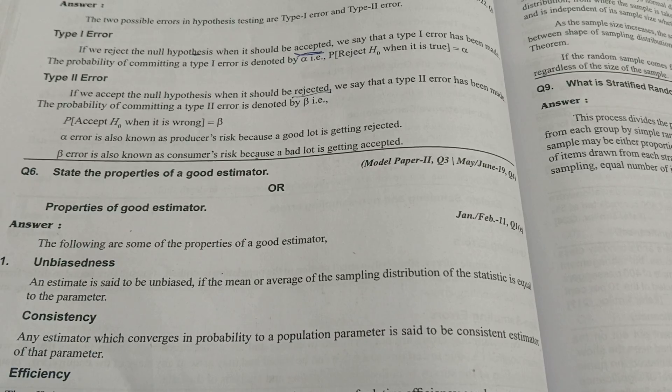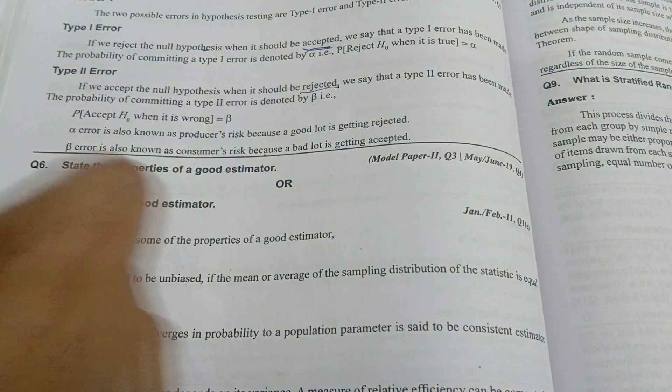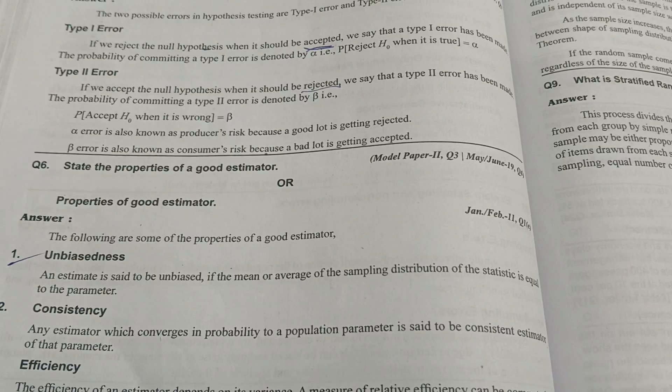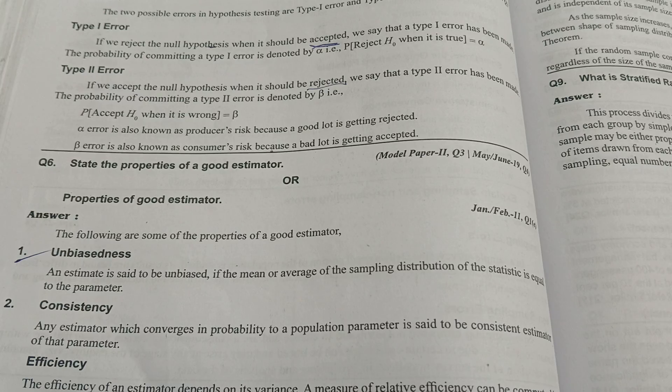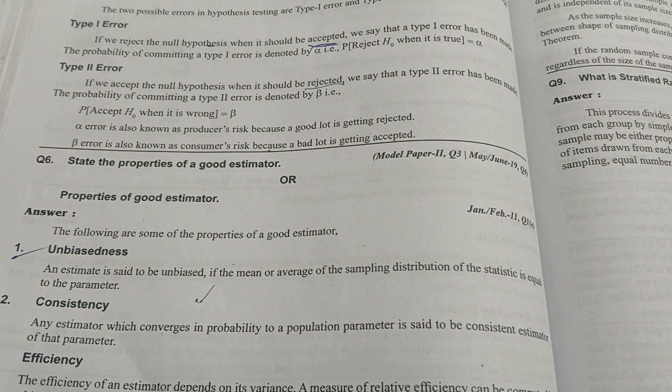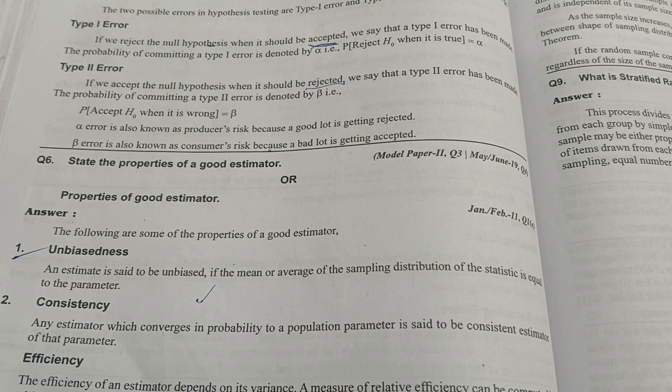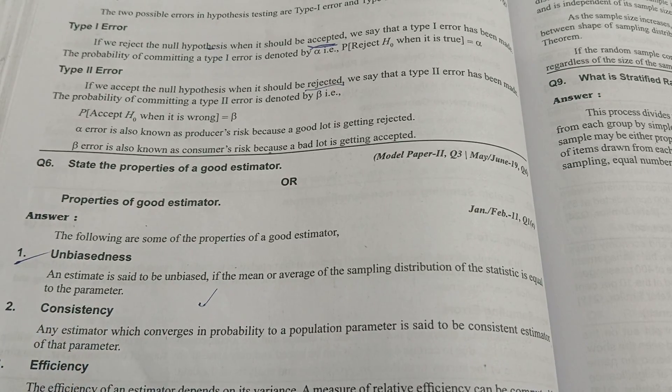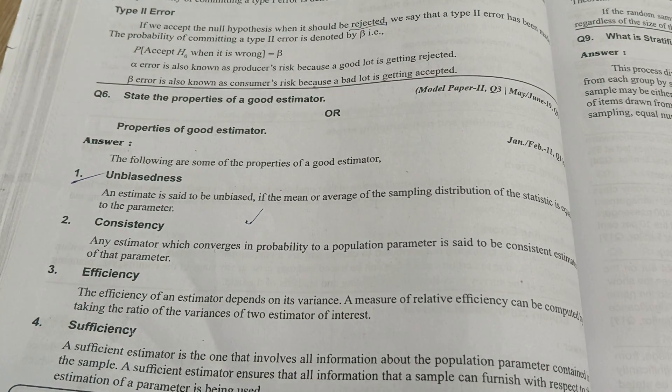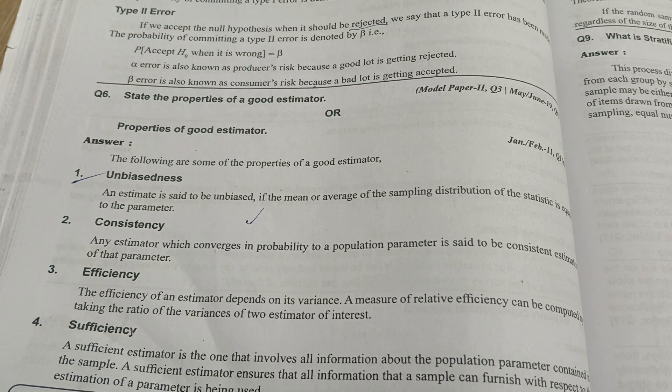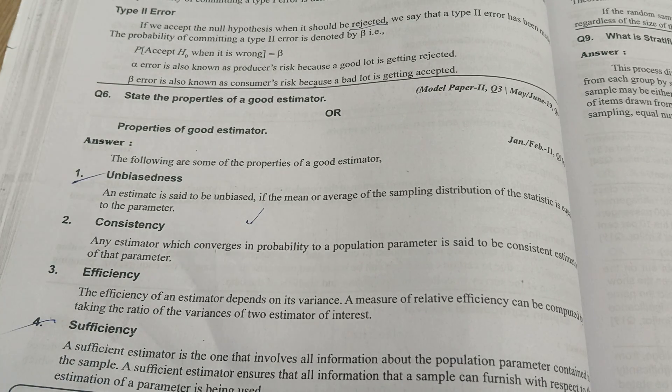Next, you are having properties of good estimator. For example, unbiasedness means without any bias, whatever information is there, it should be equal and without any discrimination. Next, consistency is one of the properties of a good estimator. Whoever is predicting in the organization, he should be consistent in nature. Next, efficiency. He needs to be efficient in whatever circumstances are happening in the organization. Next, sufficiency. Whatever information or resources are there, it should be sufficient in nature also. These four are the main qualities or properties of a good estimator.